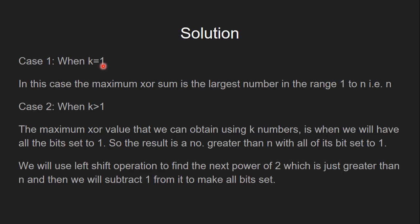Case 2: When k is greater than 1. The maximum XOR value that we can obtain using k numbers is when we will have all the bits set to 1. So the result is a number greater than n with all of its bits set to 1.